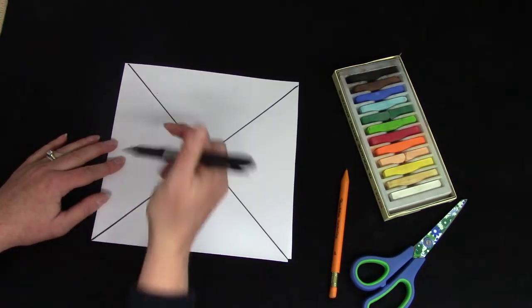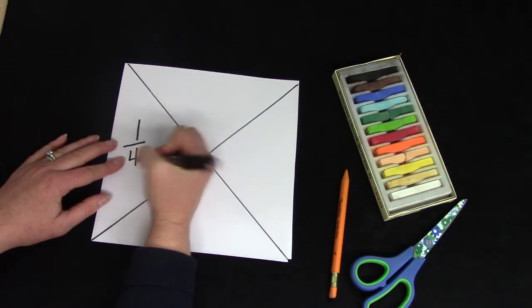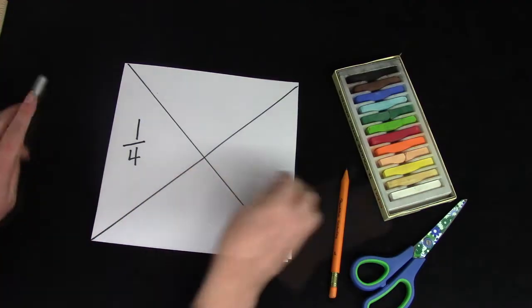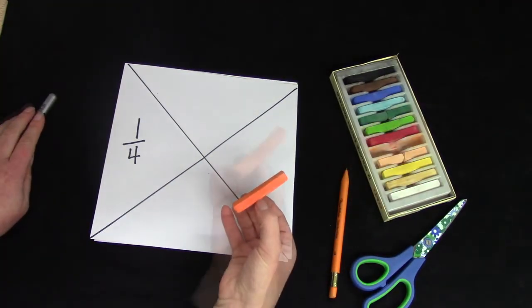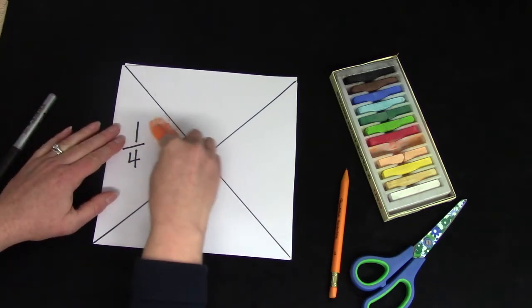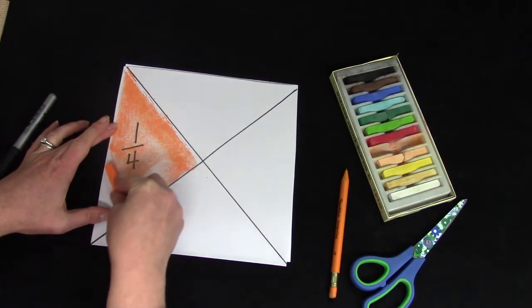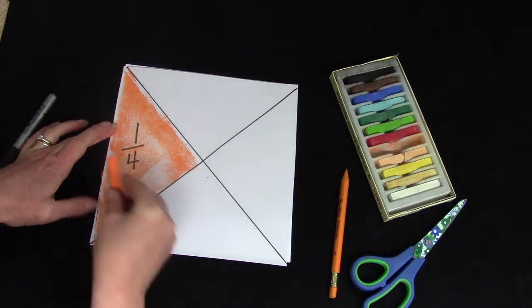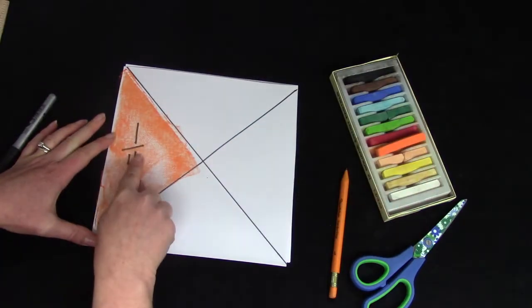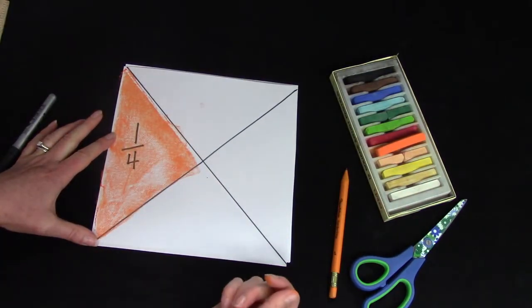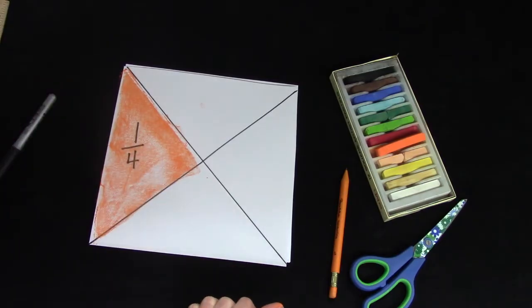One of these triangles is one out of the four pieces that we would need to have a whole square. I am going to use my chalk pastels to color this because they go so quickly. There we go. I have one fourth, one out of the four pieces colored. This is one fourth of my square.